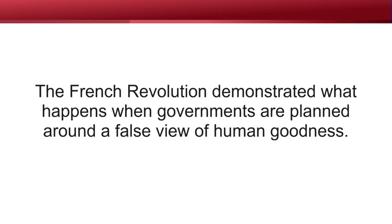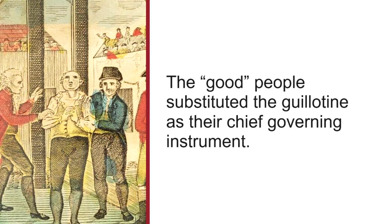A perfect example of why it was so important for the Founding Fathers to understand the depravity of man was the French Revolution. The French Constitution of 1792 — about five years after the U.S. Constitution was written — demonstrated what happens when governments are planned around a false view of human goodness. It held an idealistic, definitely unbiblical view of humans. The French banished Christianity from public life and had great hopes for both mankind and their constitution. But the Second French Republic lasted for just three years, and those people substituted the guillotine for their chief governing instrument instead of their constitution. America's constitution was written by men who understood both their capacity to rule and their need for restraint.